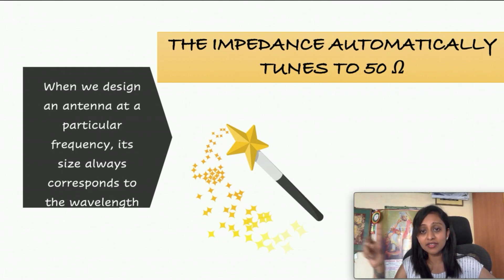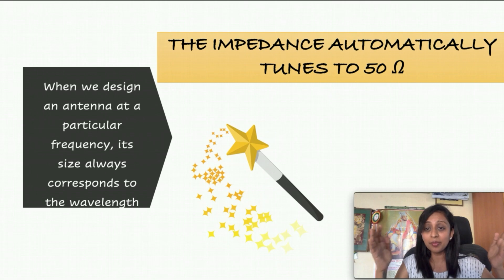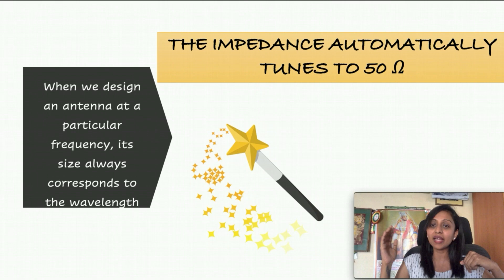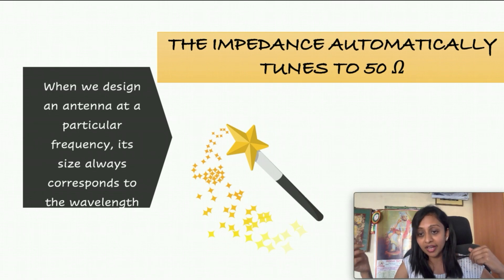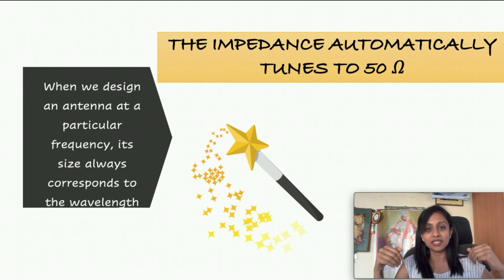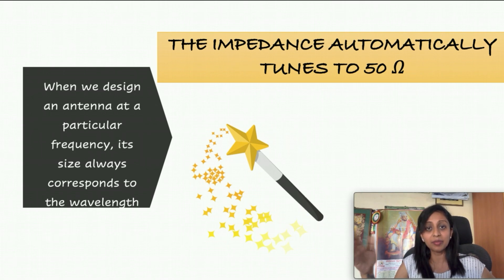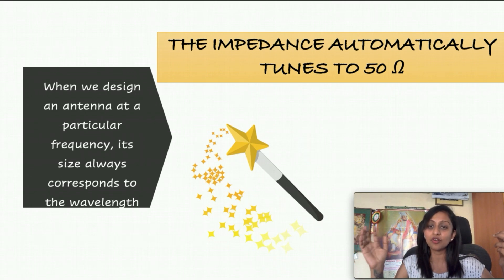How would the impedance be for other frequencies? It is not 50 ohms — it may be any other value. Hence, when the impedance is not 50 ohms, maximum power transfer does not happen, which means even though radiation is falling on the antenna, it will not be sensitive enough to take it. It can absorb only when impedance is perfectly matched. For any other frequency, since the antenna was not designed for it, even if the signal falls on it, the antenna is insensitive. Everything gets reflected back — the only thing it absorbs is the frequency for which it is tuned.